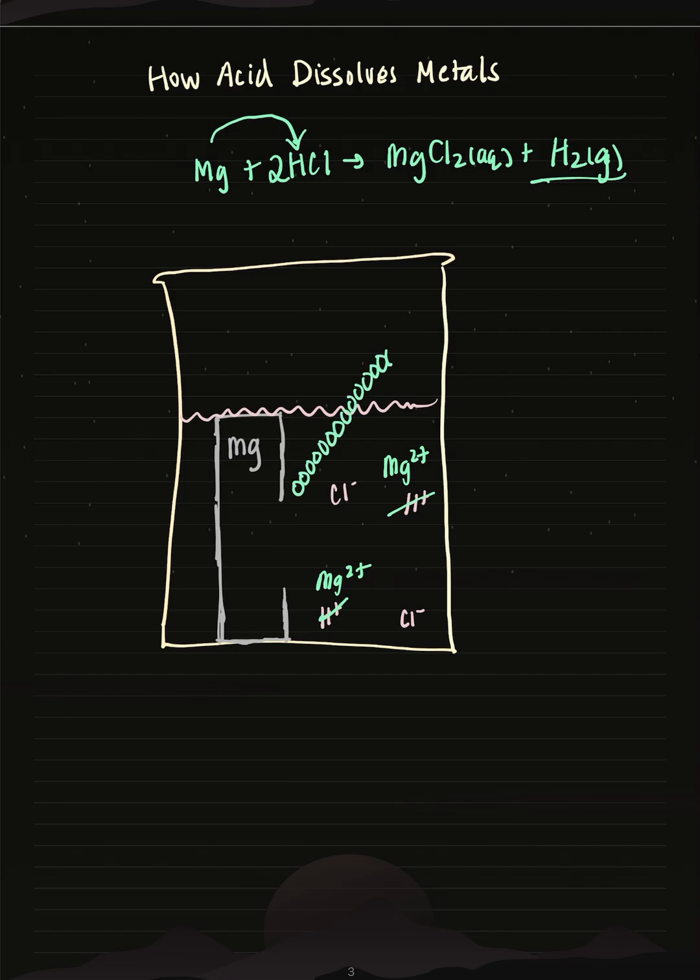And so we're going to see a lot of bubbling in this reaction over time. And over time, this entire magnesium strip would eventually dissolve as all of the metal will become ions in the solution.